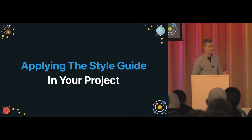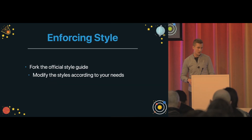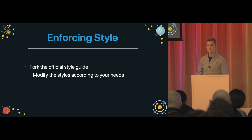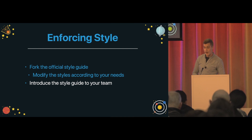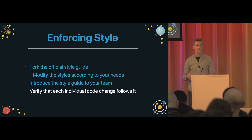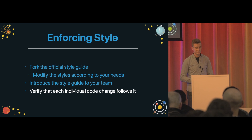I was thinking about the process of actually applying this style guide inside a project. Usually the process is: first we need to potentially fork the official style guide if our project has different needs, and based on that we can bend it a little bit to fit our needs. Right after that, we need to introduce it to the entire organization, and in the end we need to verify that each individual code change follows the style guide — this includes legacy code as well as changes and new features.